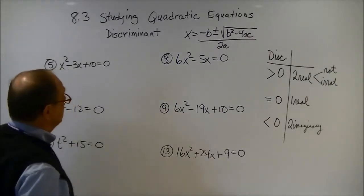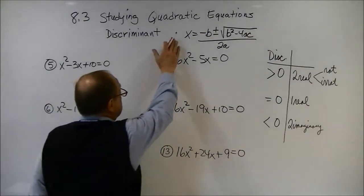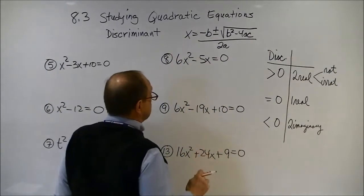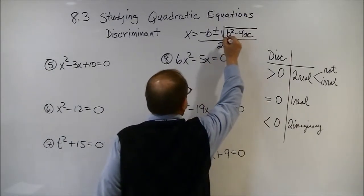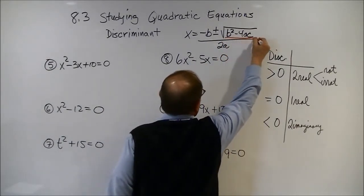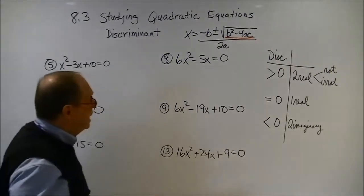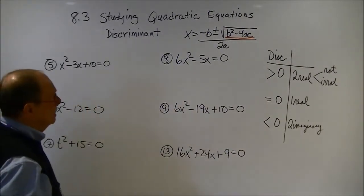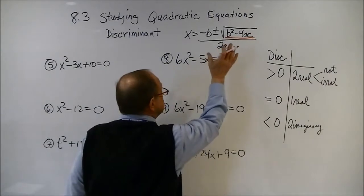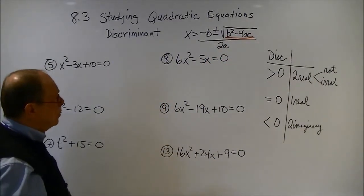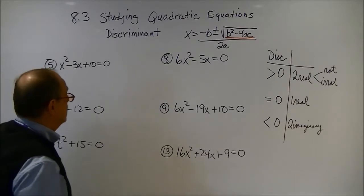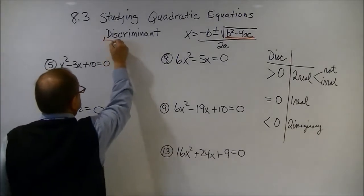As we look at the quadratic formula that I have left up here from the previous lesson, we see something under the radical sign here. This radicand, under the radical sign, has a special place in the quadratic equation. It is called the discriminant.